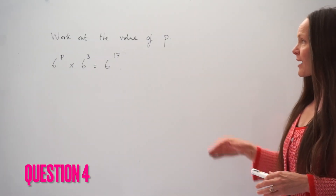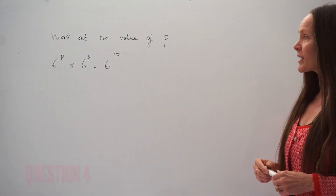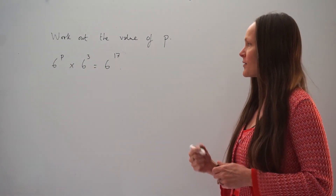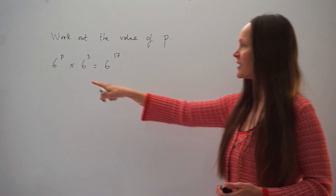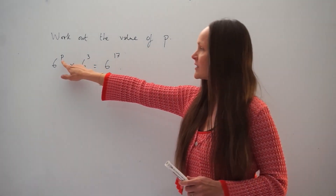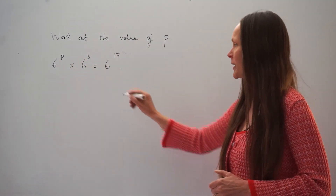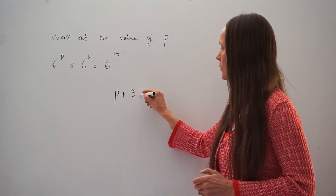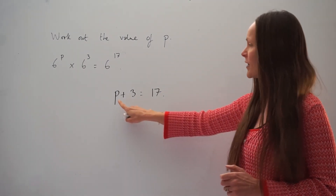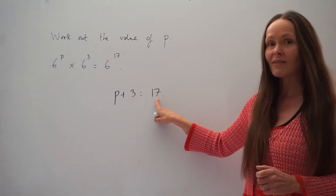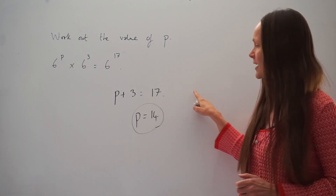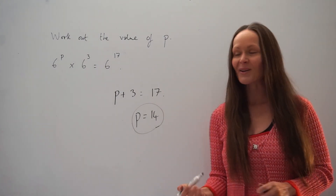In this question, we have to work out the value of p. We're given the equation 6 to the power of p times 6 cubed equals 6 to the power of 17. The same number, 6, is used throughout, which means when we add those powers p and 3 together, they must equal 17. So you have to ask yourself: what number, when you add it to 3, gives you 17? It should be 14, since 14 plus 3 equals 17, so p is equal to 14.